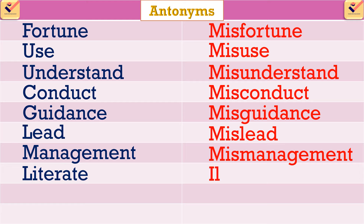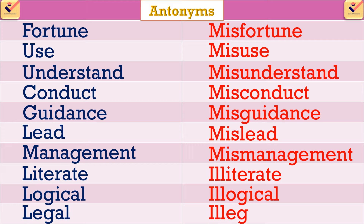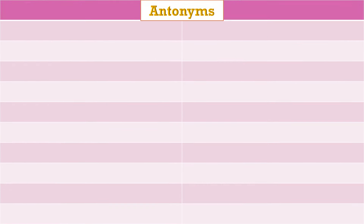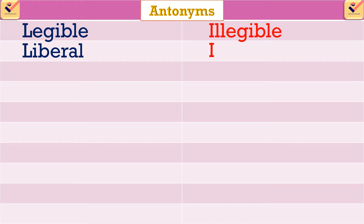Antonyms using the prefix 'ill': literate – illiterate, logical – illogical, legal – illegal, legible – illegible, liberal – illiberal, literacy – illiteracy.